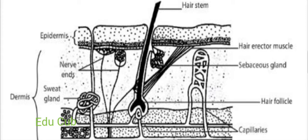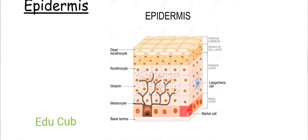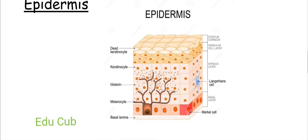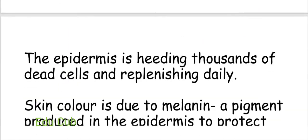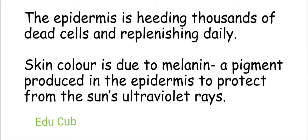Look at the parts of the epidermis and what the dermis contains. The outermost layer of the skin is the epidermis. The epidermis is made up of several layers of cells, shedding thousands of dead cells and replenishing daily. Skin color is due to melanin, a pigment produced in the epidermis to protect from the sun's ultraviolet rays.